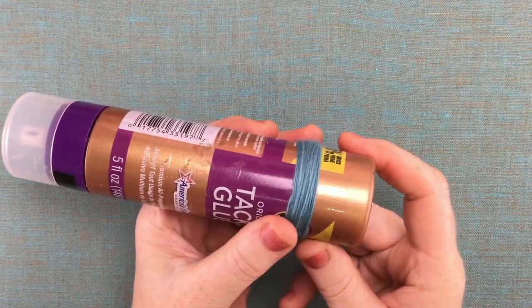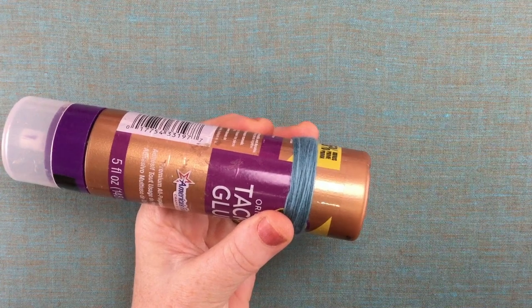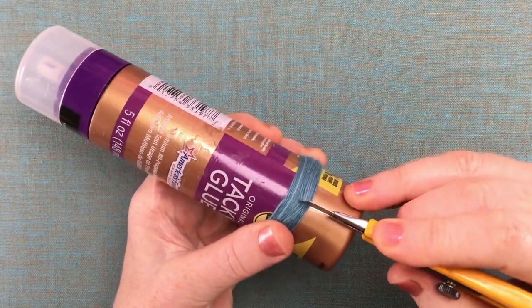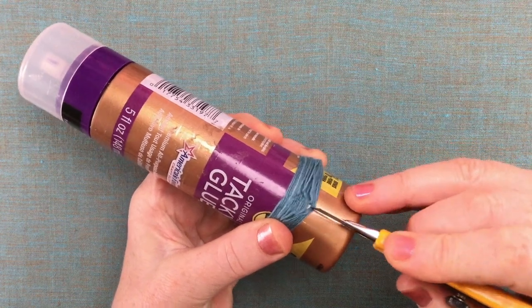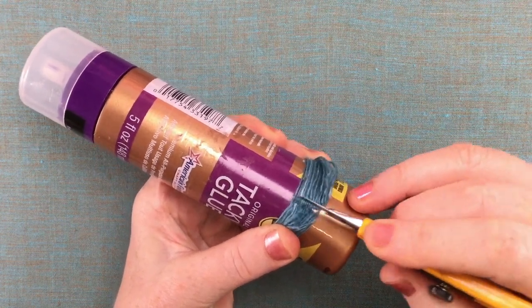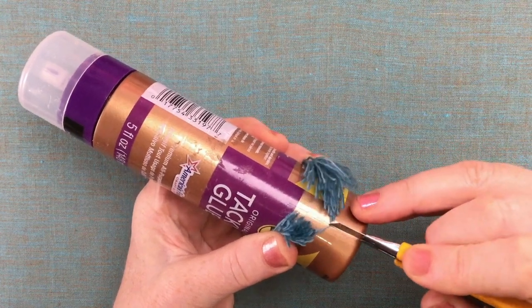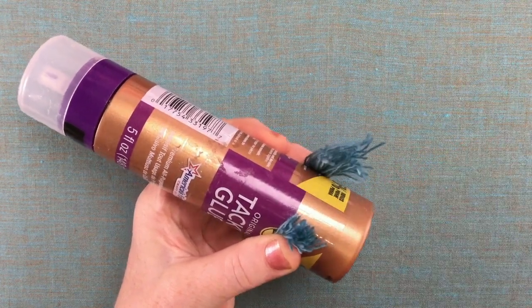So this is about 40 wraps. If you have an exacto knife or a little box knife like this, you can just cut through your fibers being careful not to cut through your container of course. You can also just sneak some scissors underneath the fibers because the plastic bottle has a little flexibility.